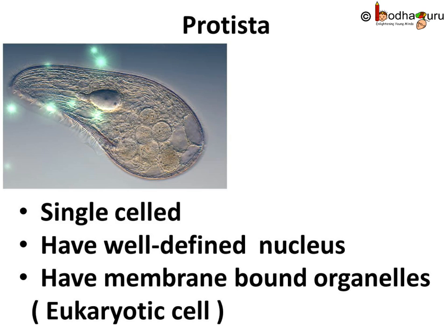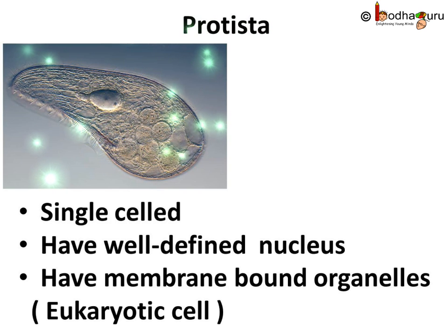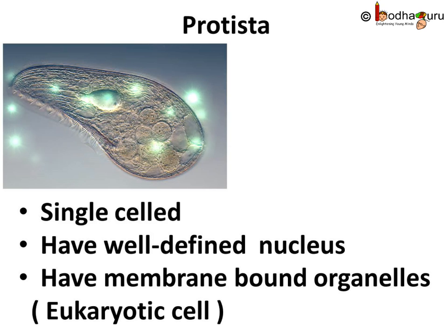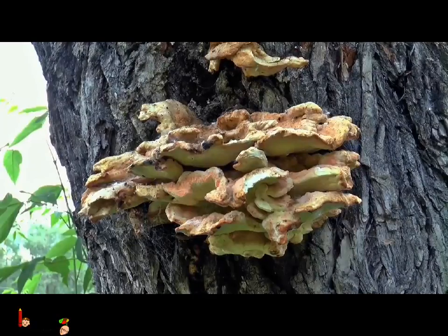Next comes kingdom Protista. This group has single-celled organisms having eukaryotic cells, meaning they have a well-defined nucleus and also have membrane-bound organelles. Some of them have appendages such as hair-like cilia or whip-like flagella for moving around. Single-cell algae, protozoa like amoeba, paramecium, and euglena are a few members of the Protista kingdom. Basically, kingdom Protista consists of eukaryotes.